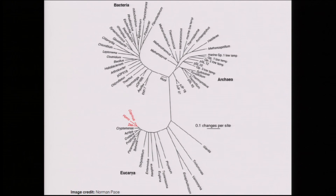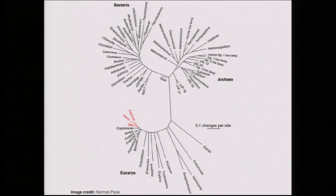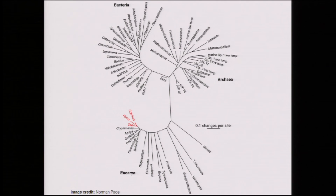Before I jump into the method, I just wanted to take a moment to look at the tree of life. This is everything that we know and have sequenced and put on the tree of life. Just note these three red branches right here — this is everything we have ever seen in our lives with our naked eyes: the plants, the animals, and the fungi. Everything else on this tree of life is microbial.